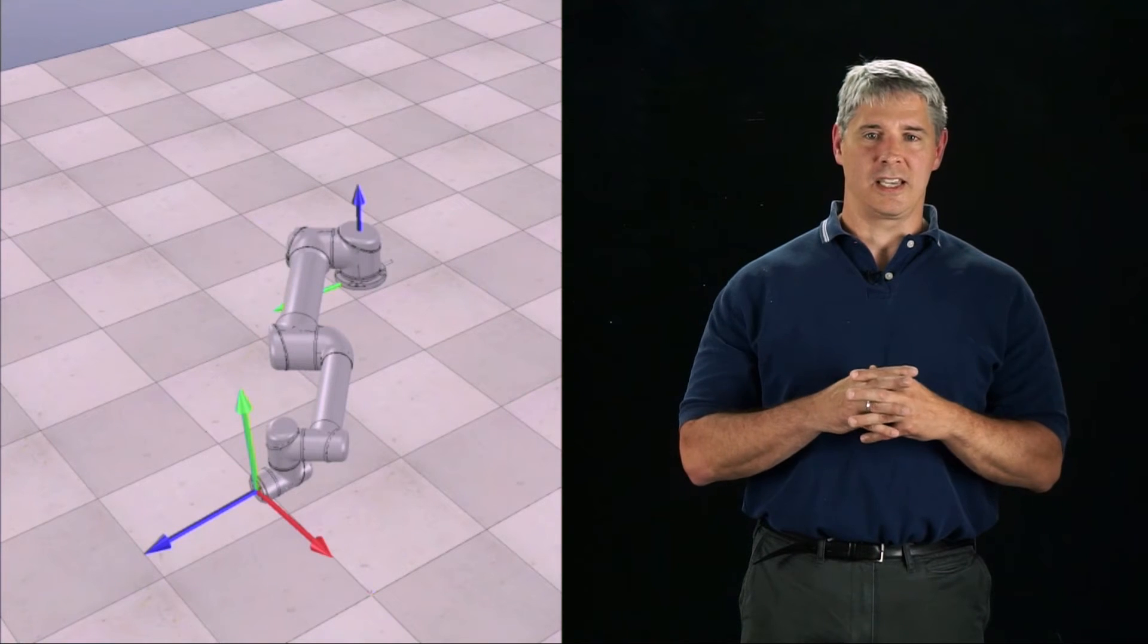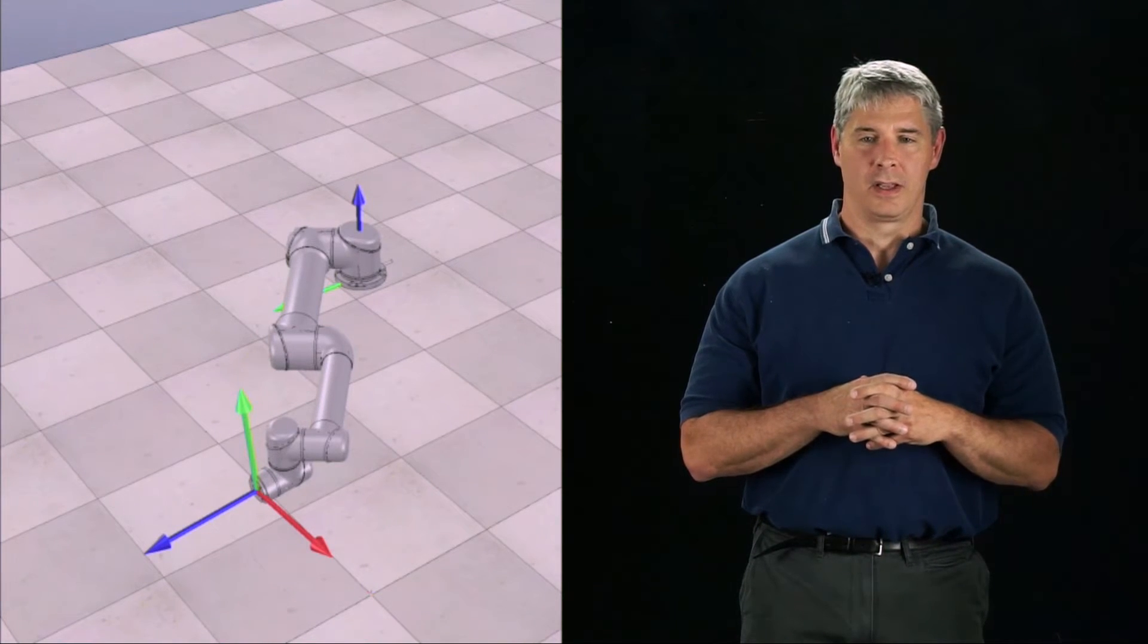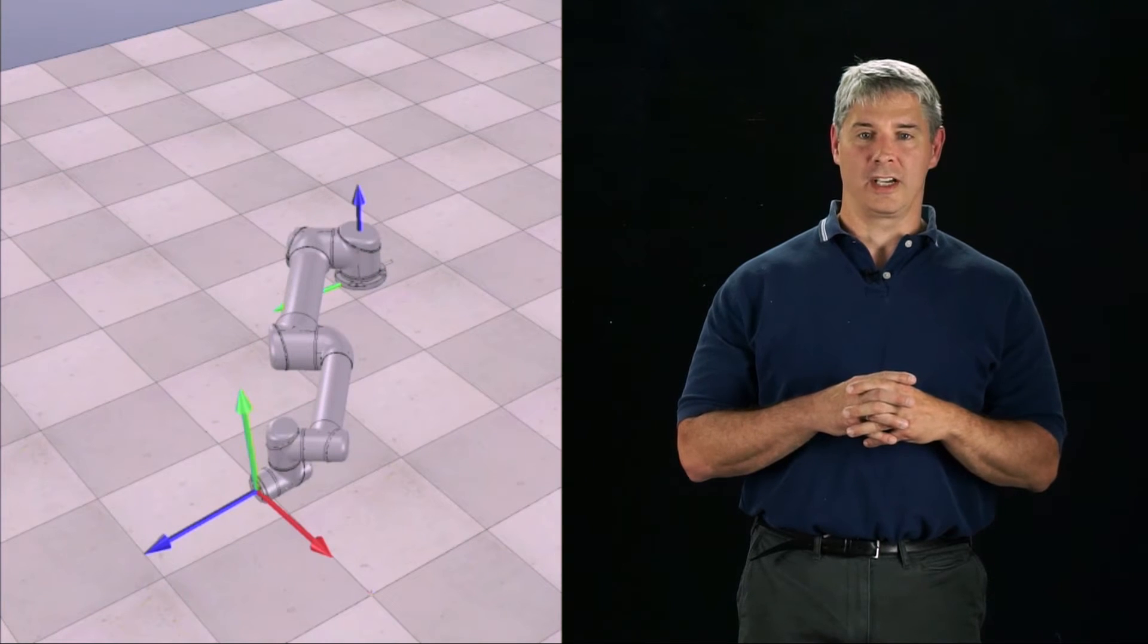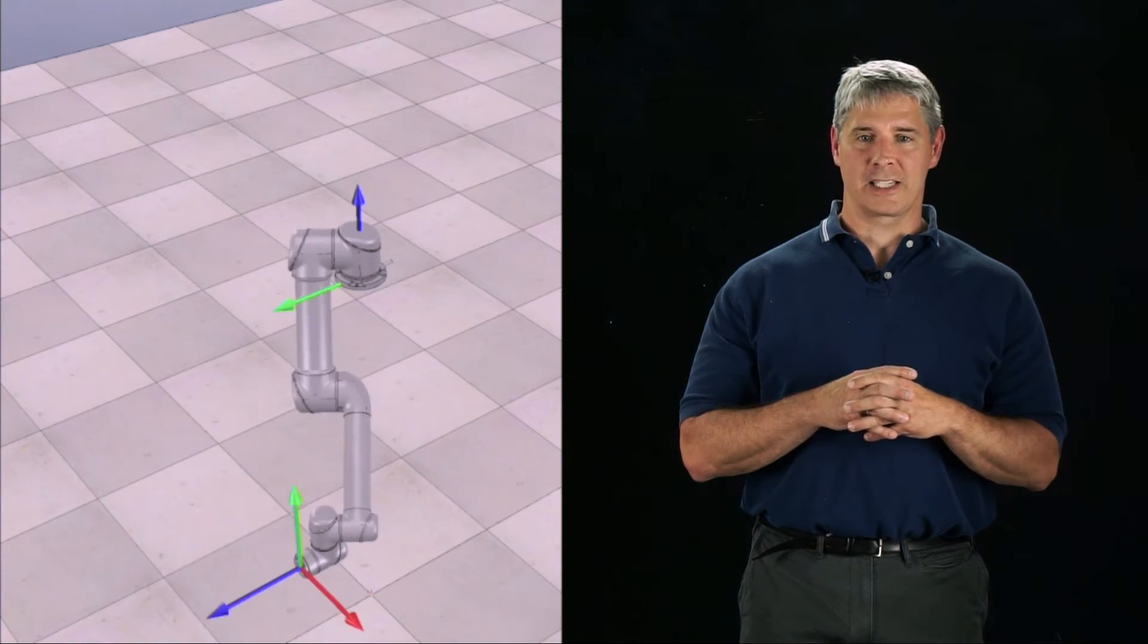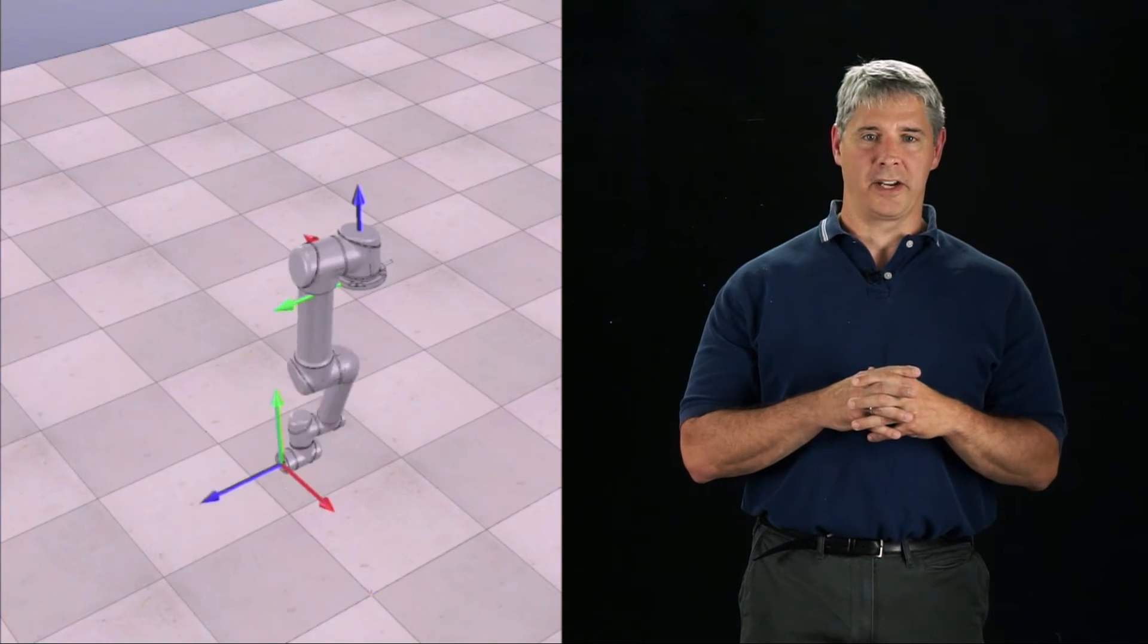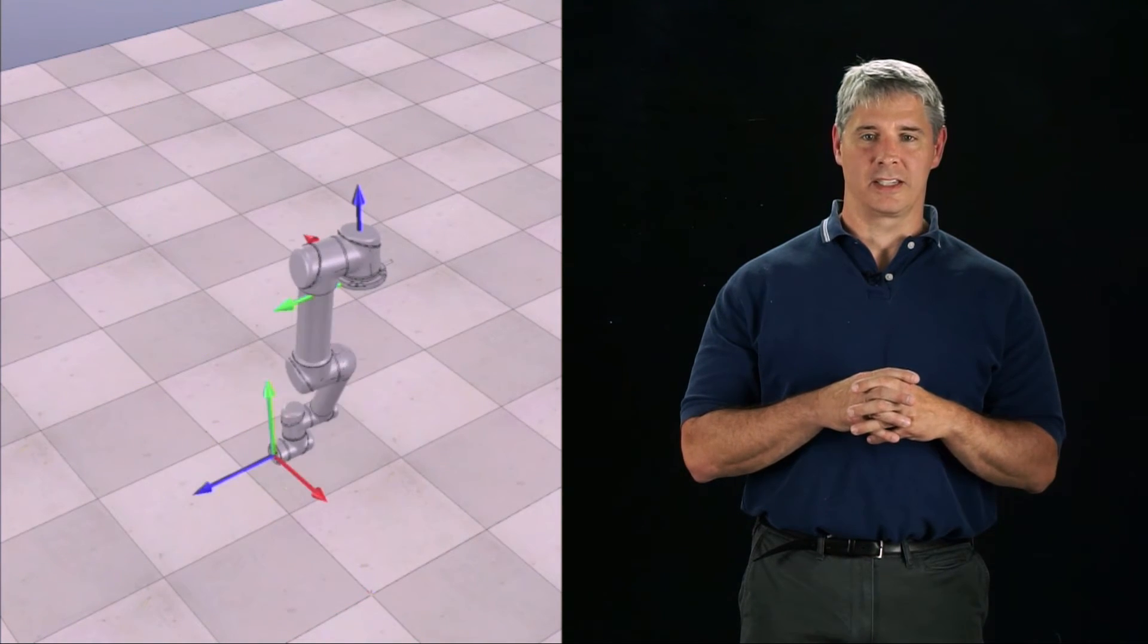This gives us one test of whether our simulation is working properly. Let's watch the simulation one more time. Notice that the arm swings to approximately the same maximum height each time, indicating that the potential energy at the end of each swing is approximately the same.